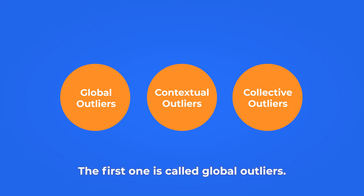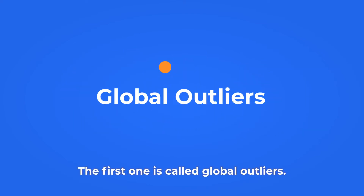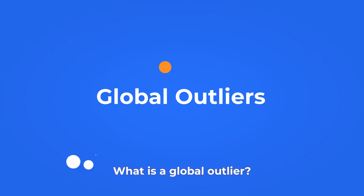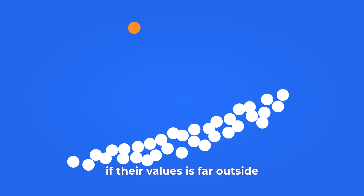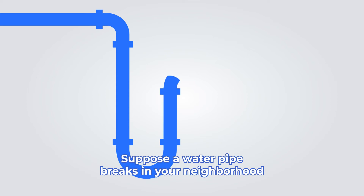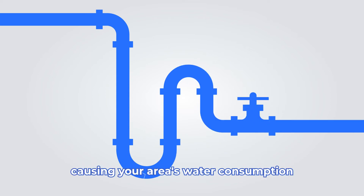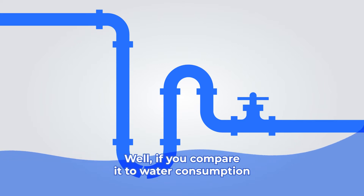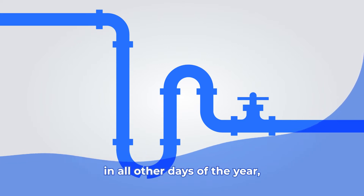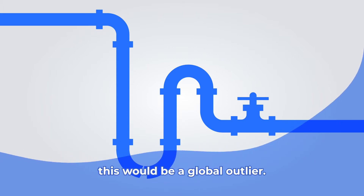The first one is called global outliers. A data point or points are considered a global outlier if their value is far outside everything else in the dataset. Think of it this way: suppose a water pipe breaks in your neighborhood, causing your area's water consumption to go through the roof. If you compare it to water consumption on all other days of the year, this would be a global outlier.